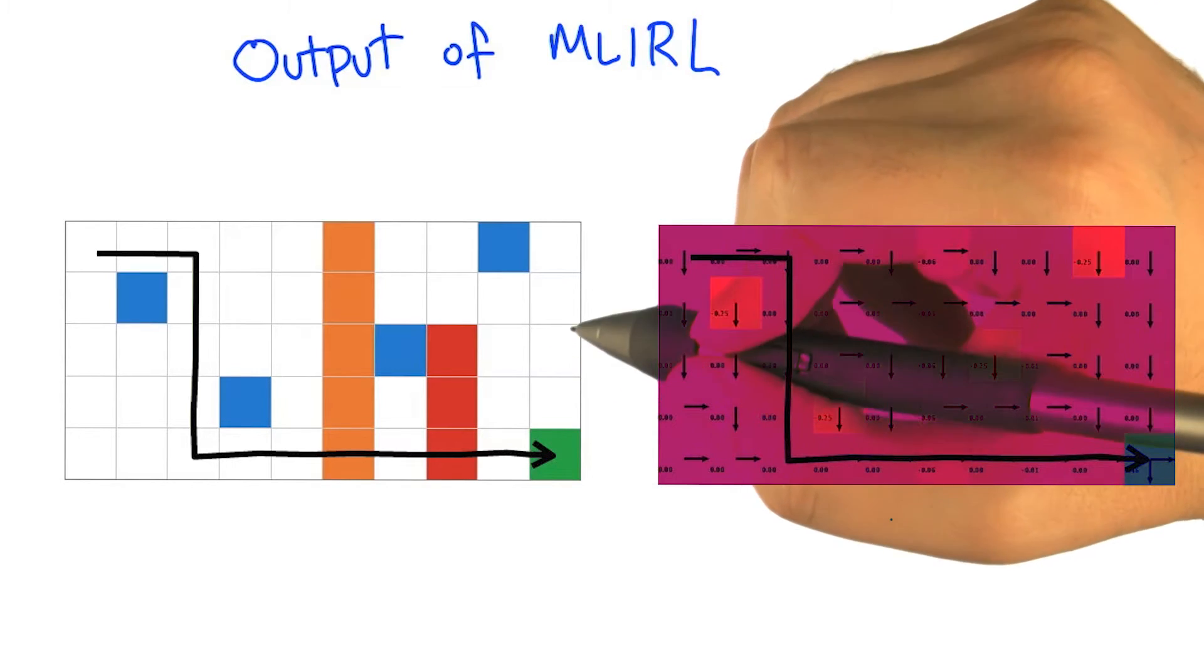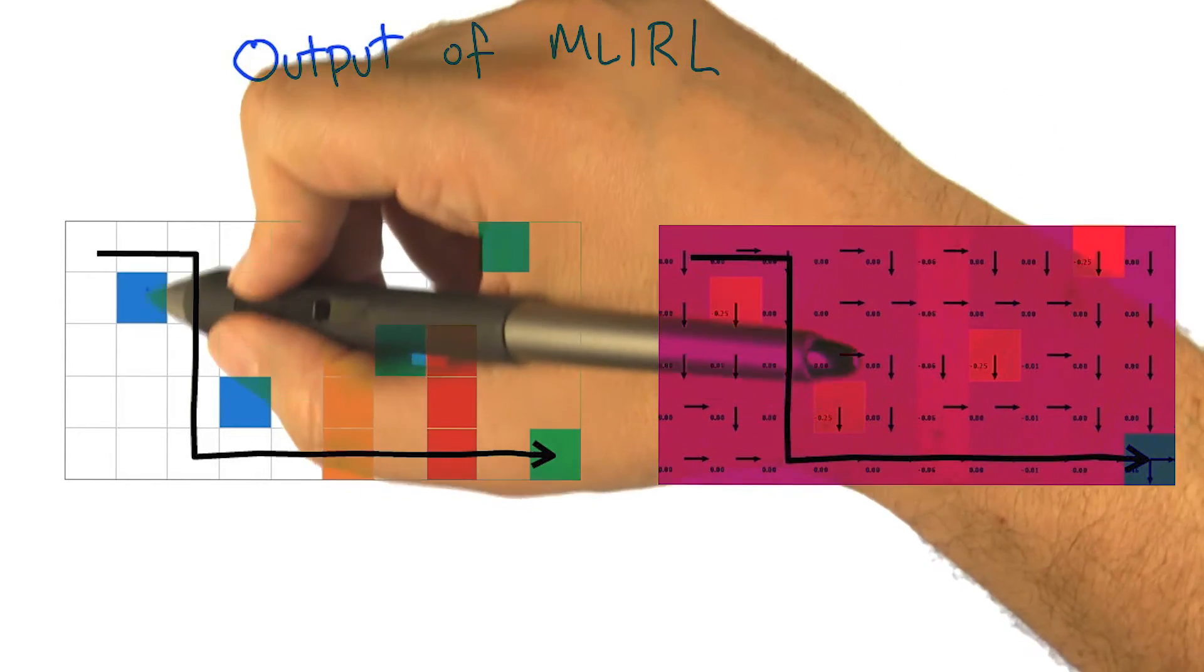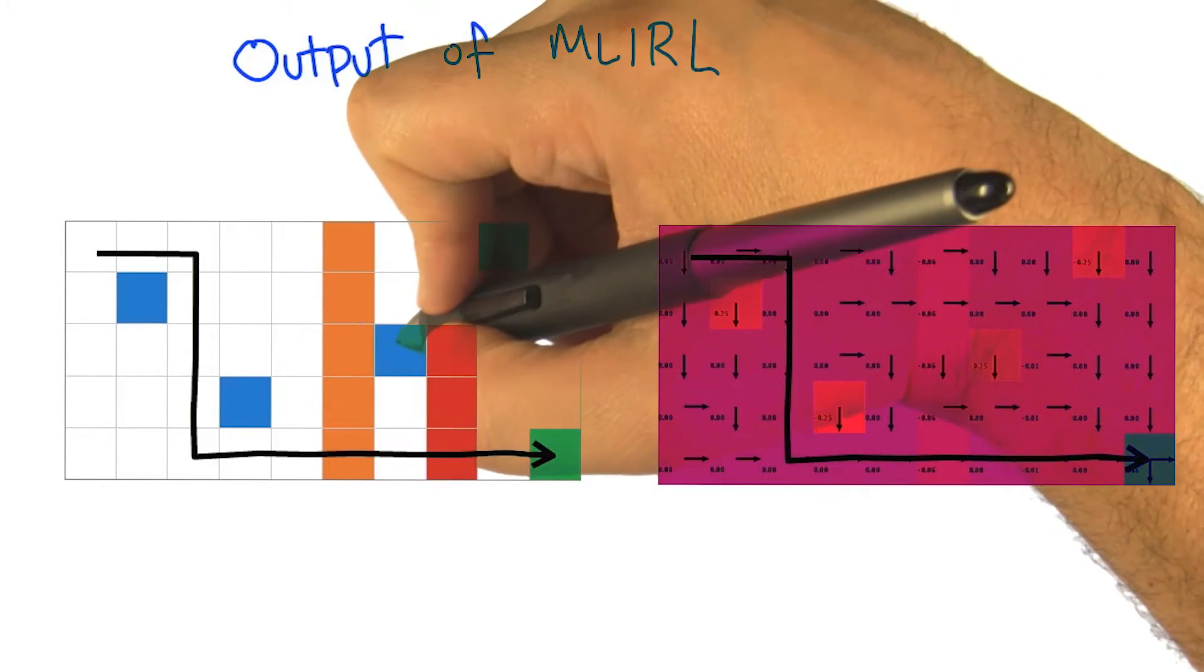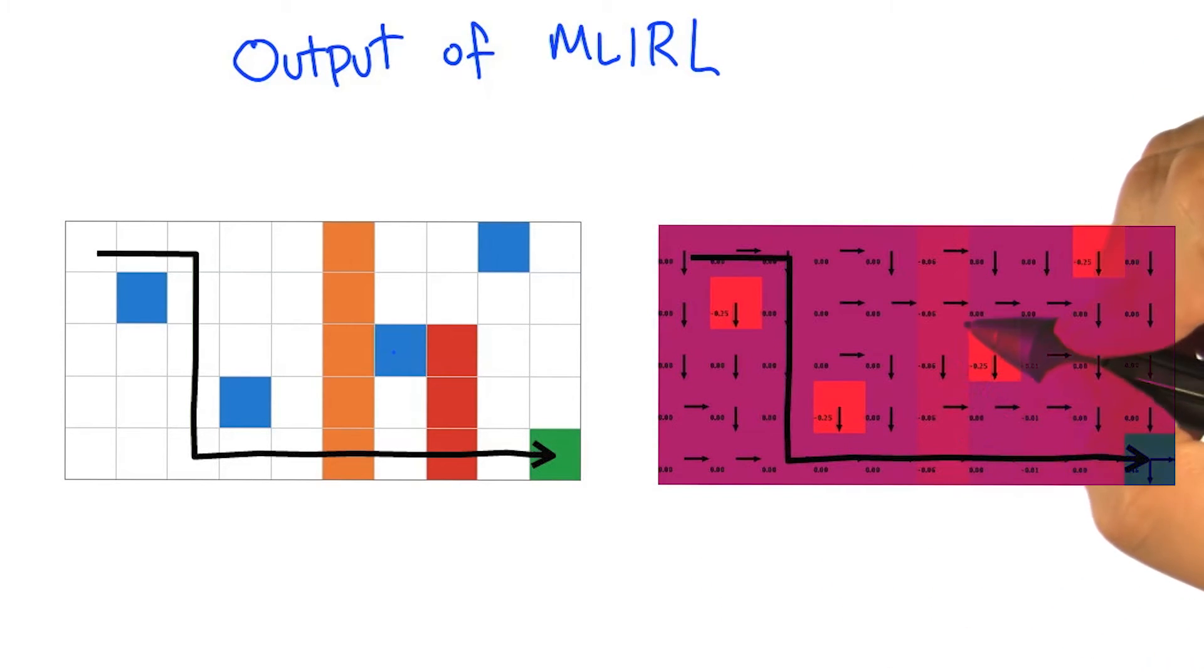All right, so even though that example that we just talked about is something that I drew up on the screen, I decided I would actually turn that into a real example and ran it in burlap with the implementation of MLIRL that's there, and this is the result. It's actually kind of neat.